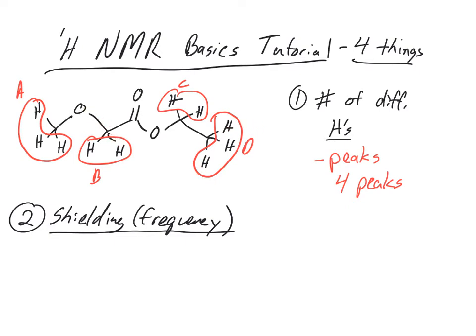Things that are near oxygens or near electronegative things become deshielded because electron density is pulling away. In this case, D would be the most shielded because it's the farthest away from an electronegative element. So shielding really tells us something about what kind of atoms these H's are near. D is going to be the most shielded, so it should be upfield — lower frequency, or in NMR terms, lower PPM.